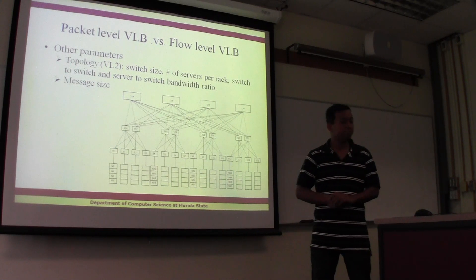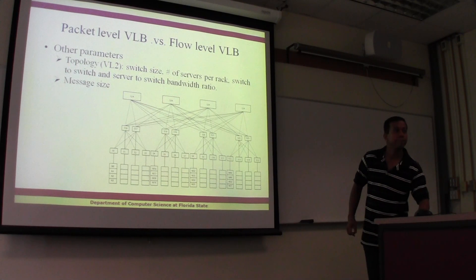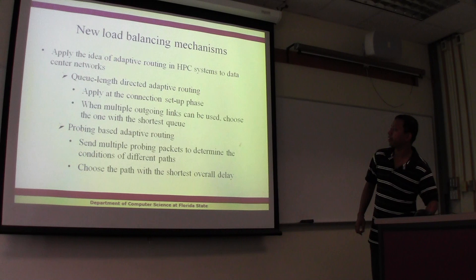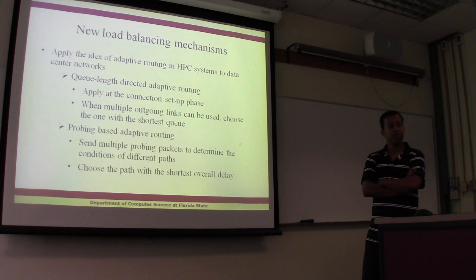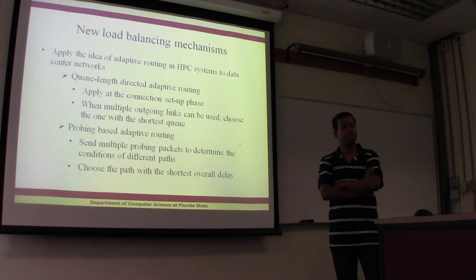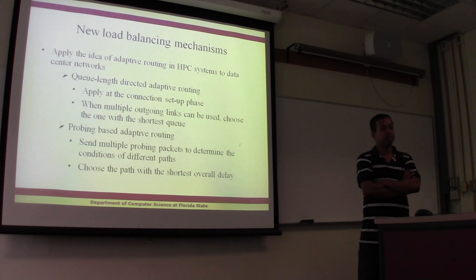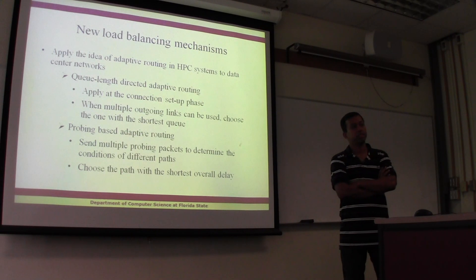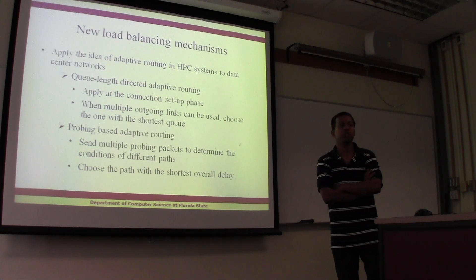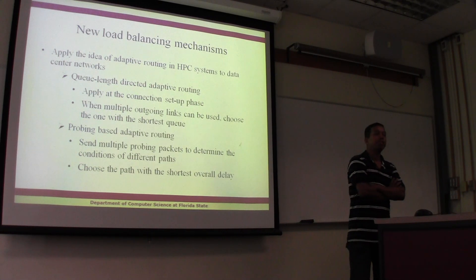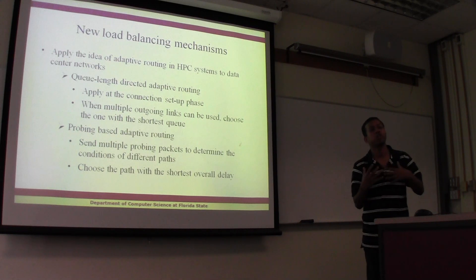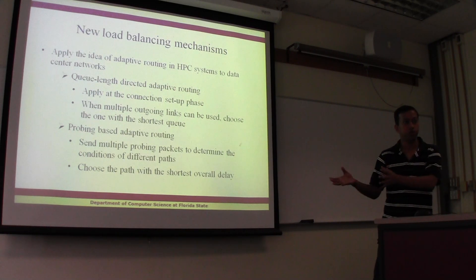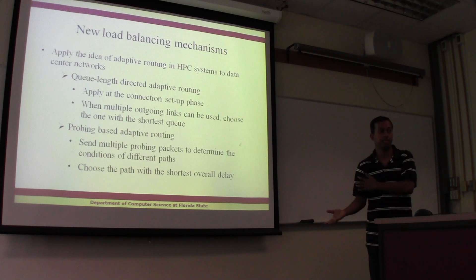A question was asked about how expensive the queue-length checking in adaptive routing is, since it checks at multiple levels. Any adaptive routing deployment has some extra overhead in processing — choosing which link has the least queue length. It does have overhead, but the question is whether it can be optimized.